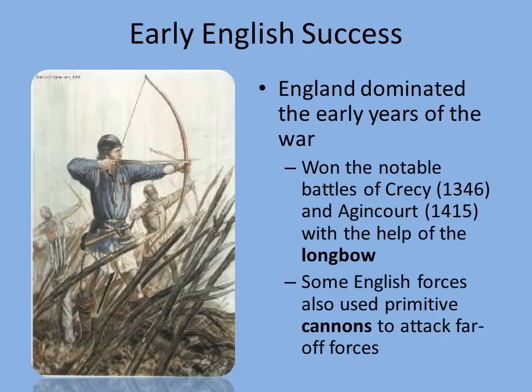Early on, England was cleaning France's clock. There are two very notable battles during the Hundred Years' War: the Battle of Crecy, fought in 1346, and the Battle of Agincourt, fought in 1415. England won these battles with the aid of new weaponry. One is the longbow — bows and arrows had been around a long time, but longbows were more accurate, could be fired much faster than a crossbow, and had a much longer range. Using longbows, England was able to decimate the French forces at Crecy and Agincourt. Some English forces also used primitive cannons to attack enemy forces further away. So the longbow and cannons definitely helped England gain a major advantage early in the war.